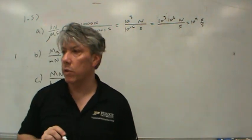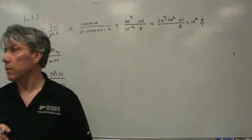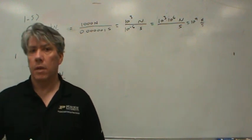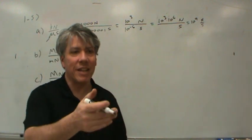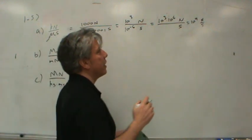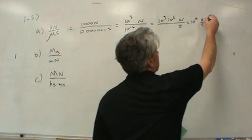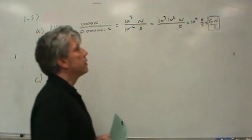Ten to the ninth is also known as what Greek prefix? Well, let's see. Kilo is a thousand. Oh, no, giga. Mega is a million, and giga is a billion. So this is giga newtons per second. There we go.